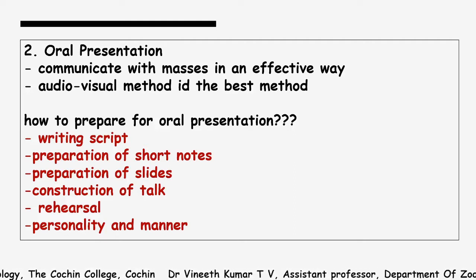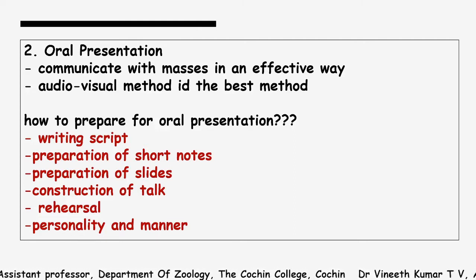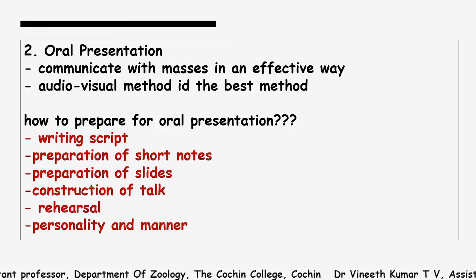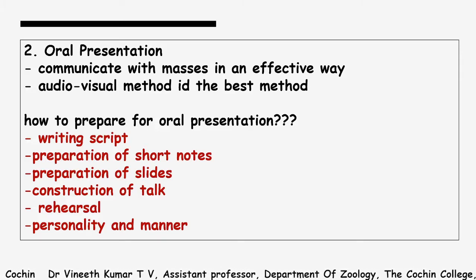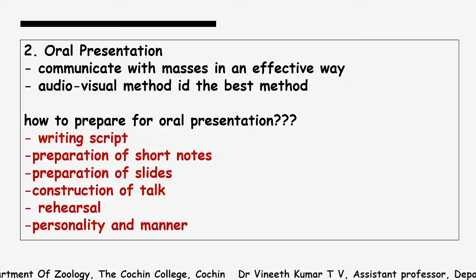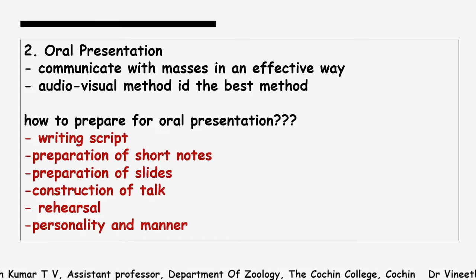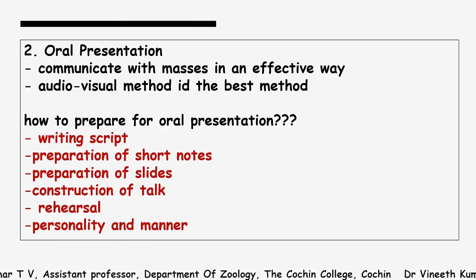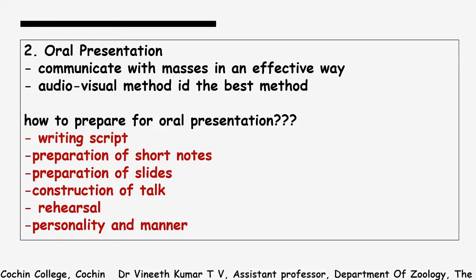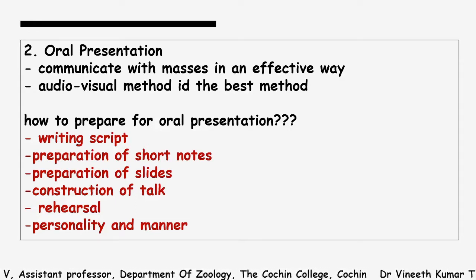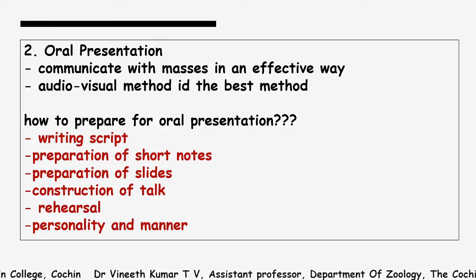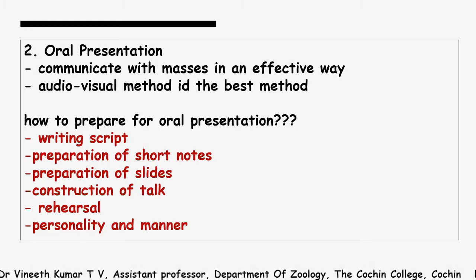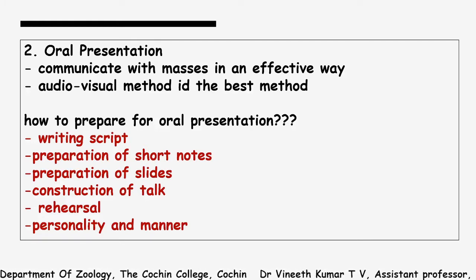Today we are going to discuss a second type of research communication which is called oral presentation. In the first type, we are writing a script or a particular report, and that report is circulated through online or offline sources like hard copies, and it will be read and reviewed by those who evaluate the project or those working in the same field. Here, in the second type, you are communicating through writings versus presenting it orally.